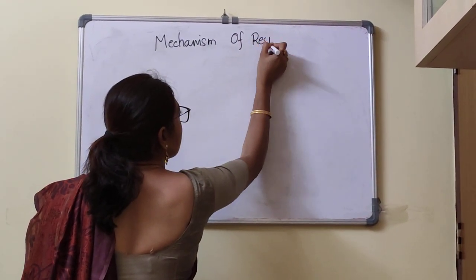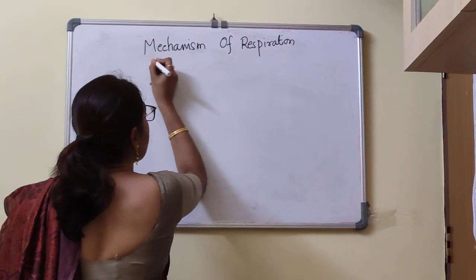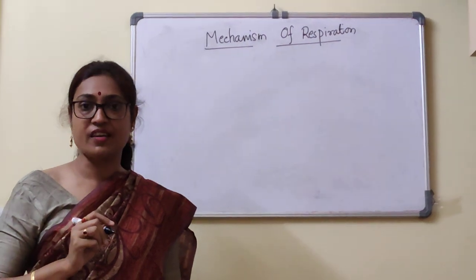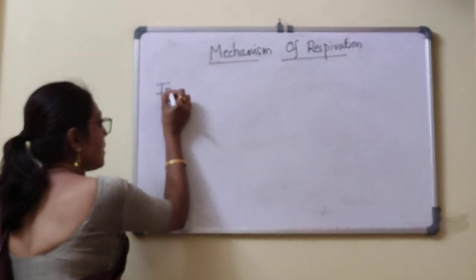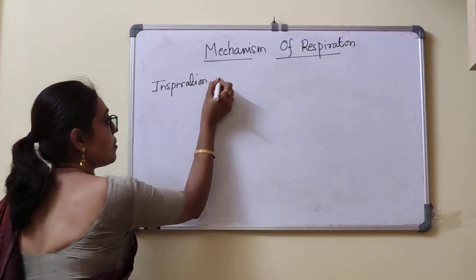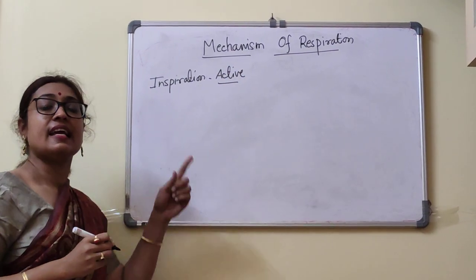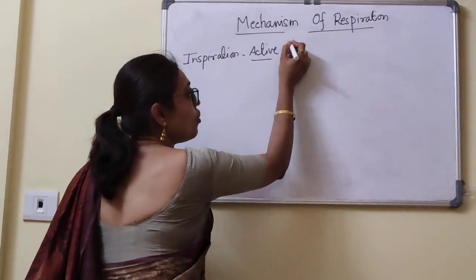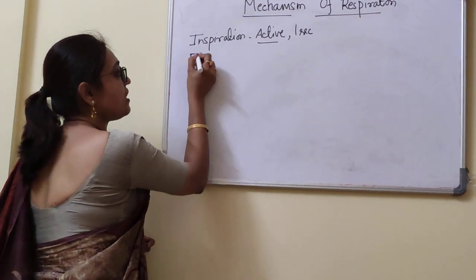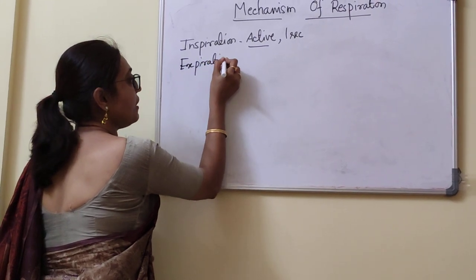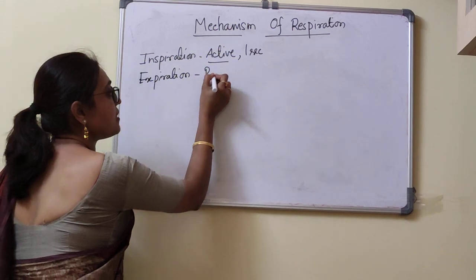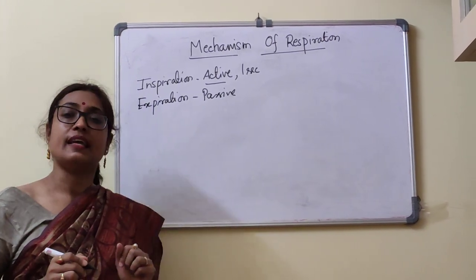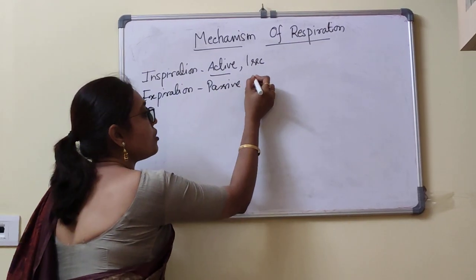Respiration involves a series of cycles and each cycle consists of two phases: inspiration and expiration. Inspiration is an active process — it requires contraction of inspiratory muscles and lasts for one second. Expiration is a passive process in normal quiet breathing, meaning it does not require contraction of any muscle. It occurs due to elastic recoiling of the lung and lasts for three seconds.